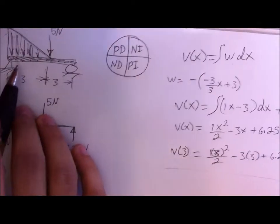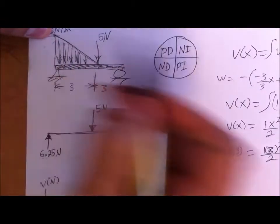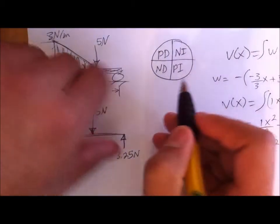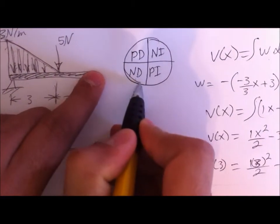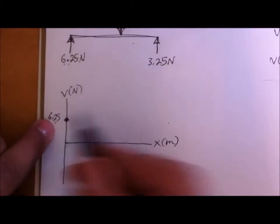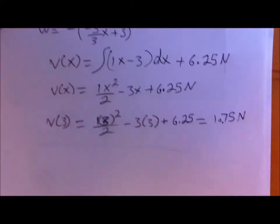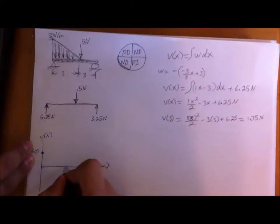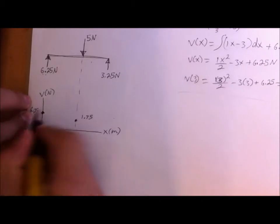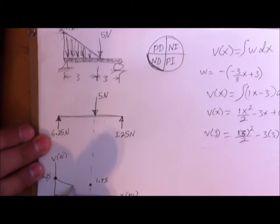What this really means is when you look at a triangle object or any type of slope object — triangle, parabola, or whatever — if the slope is going down, it's negative decreasing. So in this case we look at negative decreasing, which gives you this type of format. We have 6.25 at the start, and at 3 meters the force is 1.75, so the curve looks like that shape.